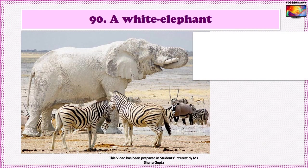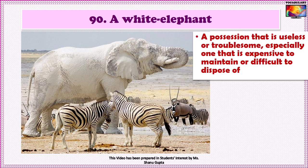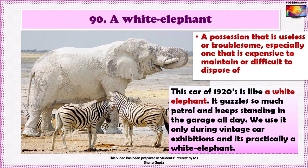The last idiom in this section is 'A white elephant.' The term implies a possession that is useless or troublesome, especially one that is expensive to maintain or difficult to dispose of. For instance: 'This car of the 1920s is like a white elephant. It guzzles so much petrol and keeps standing in the garage all day. We use it only during vintage car exhibitions and it is practically useless otherwise.'